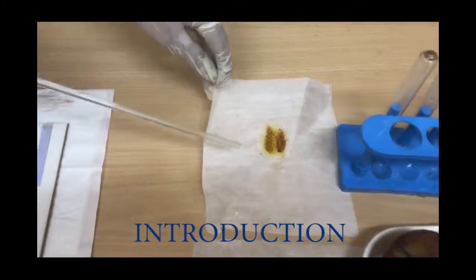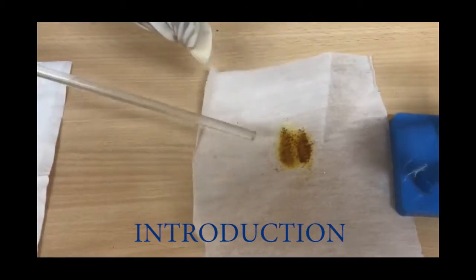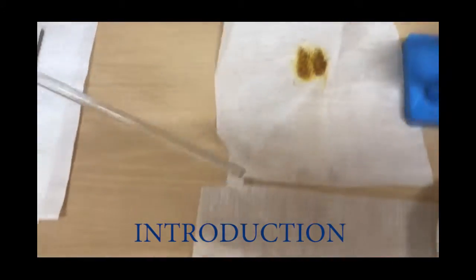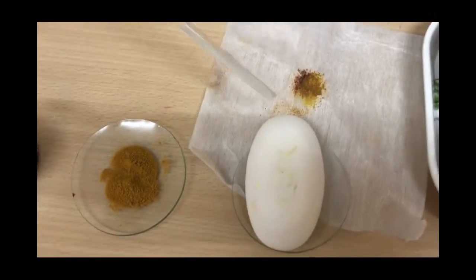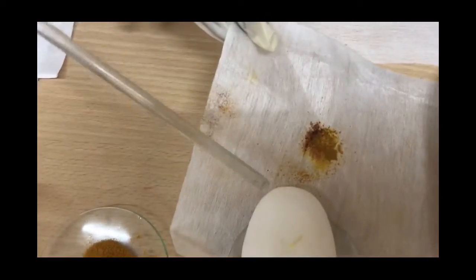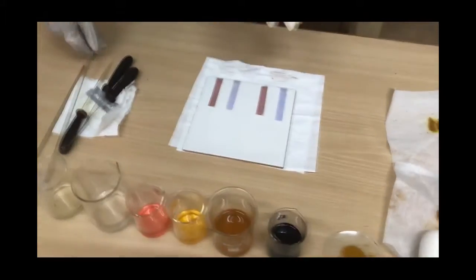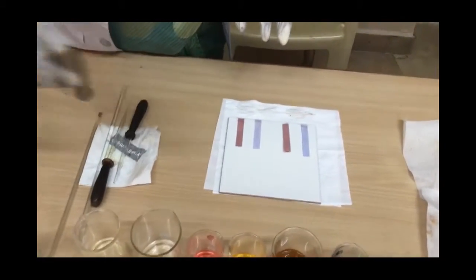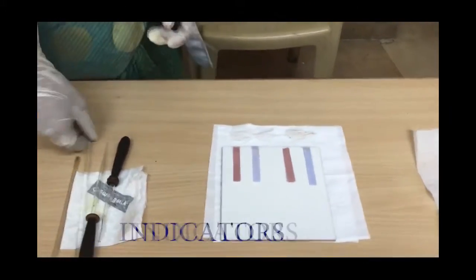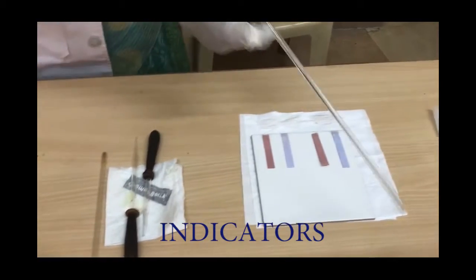If there is any turmeric stain on a white cloth and we rub with soap, the color changes to red. How? To find out the reasons, we use some special substances called indicators which help to detect the nature of a given substance.